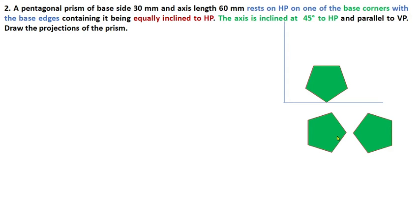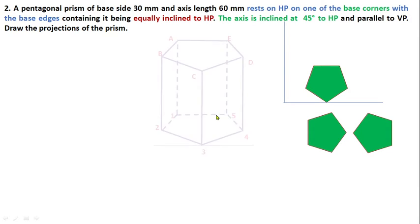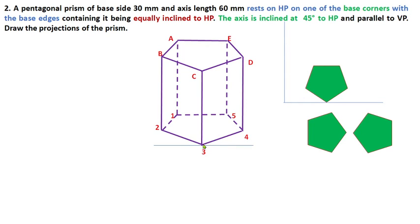Both options are correct, but we have to make sure we are tilting on the corner side, because the question states the corner is on HP. This corner is touching HP. This is the simple initial position of the pentagonal prism.